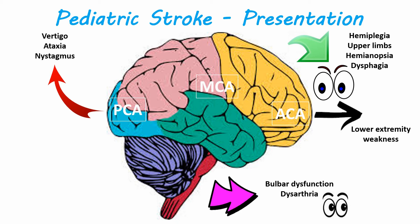All of these will present with eyes deviated toward the lesion. For a bulbar dysfunction or dysarthria presentation, you want to consider a brainstem stroke with eyes deviated away on presentation. In addition, if you see fever or lethargy, you need to consider venous sinus thrombosis; or irritability, bulging fontanelle, or meningitis-type symptoms may suggest subarachnoid hemorrhage.